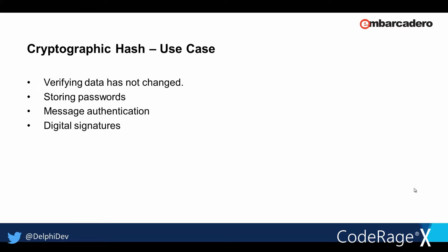Let's talk about use cases for cryptographic hashes. The easiest use case is verifying that data such as a file or message has not changed. For years people have seen hashes on files published to allow the receiver to verify the source was not changed in transit. Other use cases include storing of passwords, message authentication, and digital signatures.